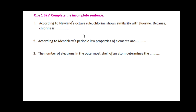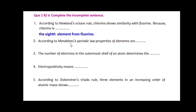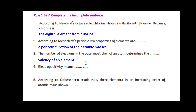According to Newland's Octave rule, chlorine shows similarity with fluorine because chlorine is the 8th element from fluorine. According to Mendeleev's periodic law, properties of the elements are periodic functions of their atomic masses. The number of electrons in the outermost shell of an atom determines the valency of an element.